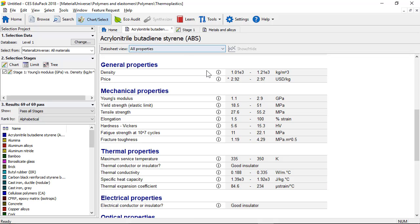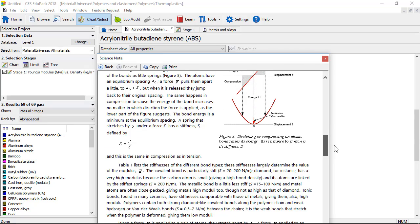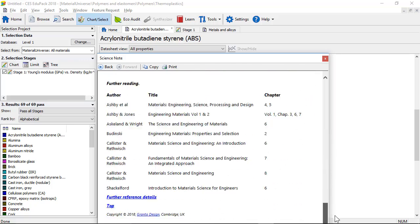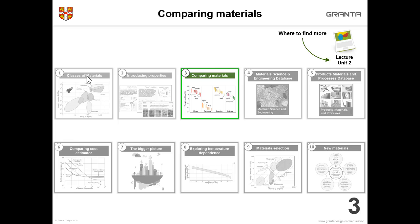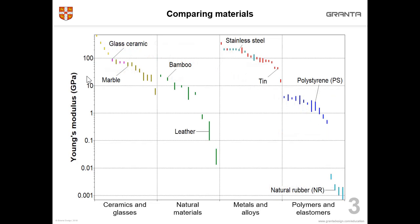Let's have a look at that in the software. If we go back to the ABS record and I click on the eye icon here, you can see the science note for Young's modulus with the definition, information about the origins of the property and references to other books where students can find out more information. On to tip number three: comparing materials. Here is a simple bar chart of Young's modulus from high to low. We can help students understand how different classes of materials have relatively different Young's moduli by making the x-axis separated by the different classes of materials.